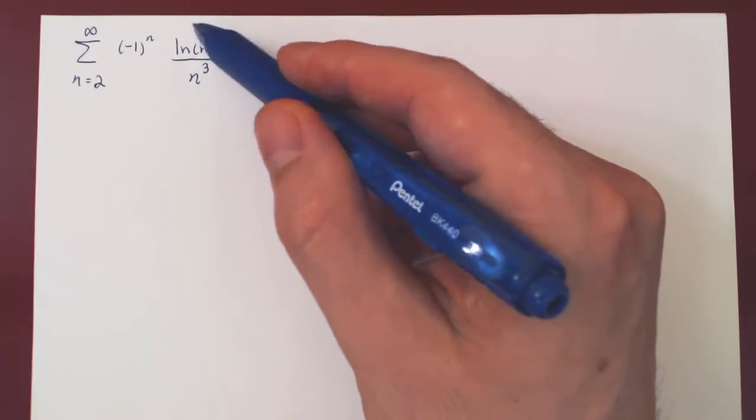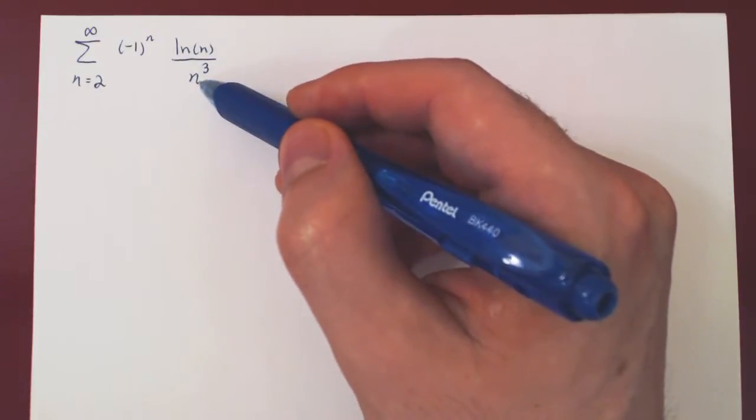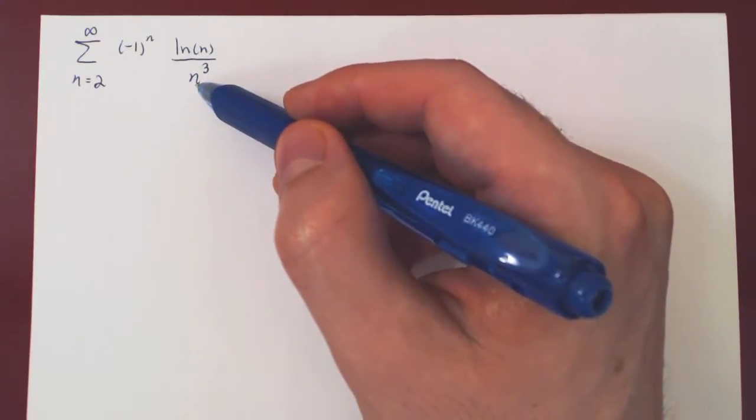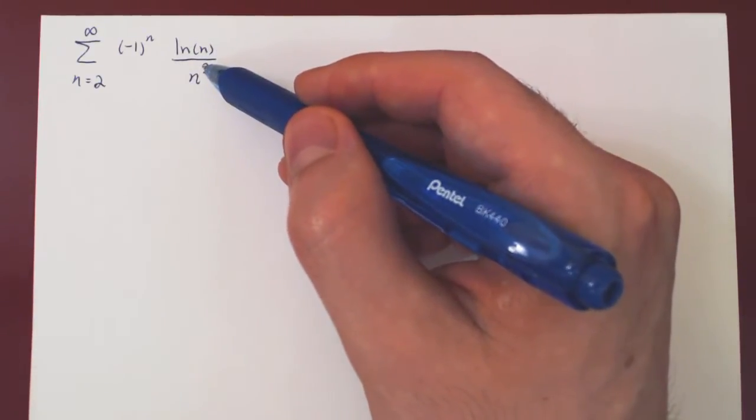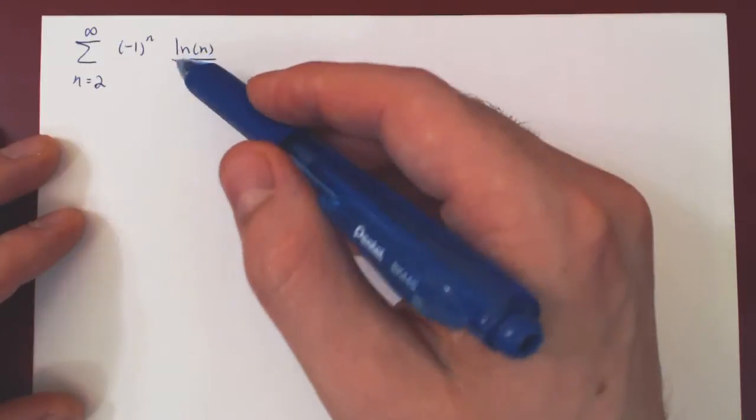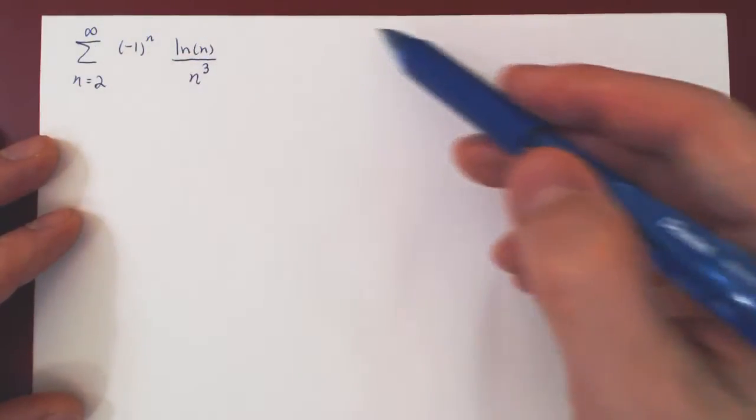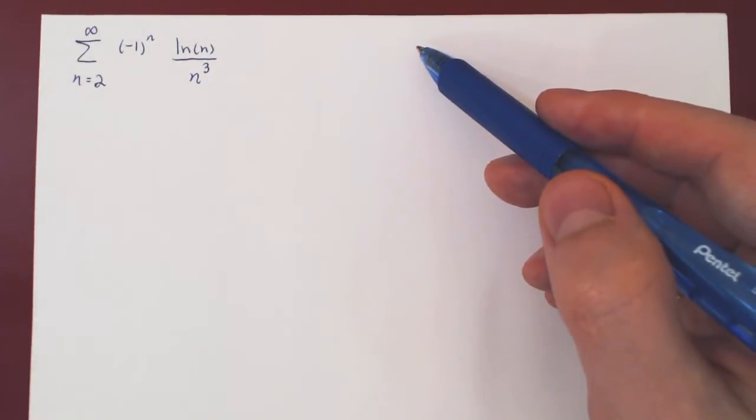And then we would have to look at the limit of ln of n over n cubed as n tends to infinity. Using L'Hopital's rule once, you will arrive at the limit that is equal to 0, which will prove that this series converges by the alternating series test.